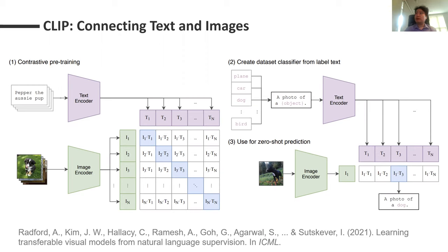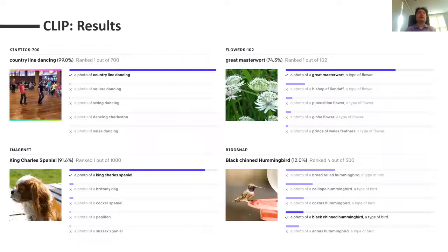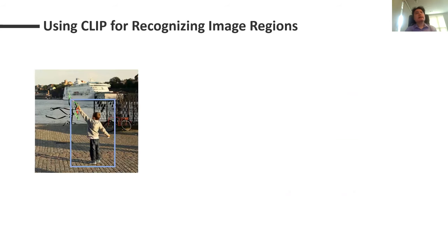This is very exciting because this is the first time this simple idea could work really well across a large range of datasets. CLIP was tried on different datasets — ImageNet, Kinetics for action recognition, and fine-grained datasets for recognizing different species of animals and plants. Very impressive results. Now, when we saw this CLIP paper, we said: well, it's really impressive — how about we use the same model to recognize individual image regions instead of the whole image?